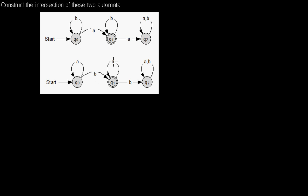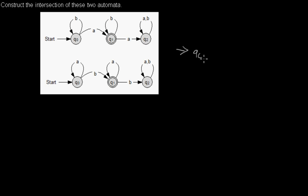In the case of the automaton, it means we want to keep all transitions that are in both automata. And what we do is, of course, we begin with a start state because there's one in each automaton.